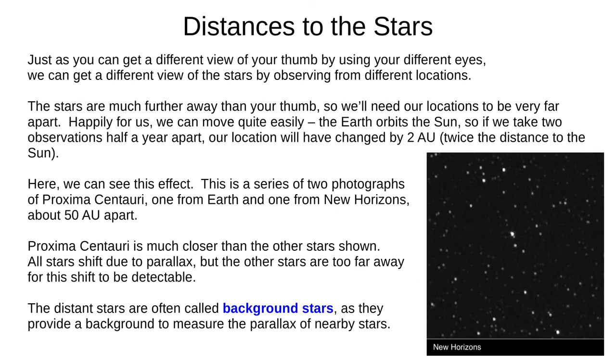In the same way, we can get a different view of the stars if we observe from different locations. The stars are much further away than your thumb, so we'll need our two locations to be very far apart to see any parallax. Luckily, we can move two astronomical units just by waiting six months for the Earth to orbit the Sun halfway. You can see a stronger parallax effect in this pair of images. One was taken from Earth, and the other by the New Horizons space probe on the same day, and you can clearly see the parallax of Proxima Centauri. This effect is only noticeable for nearby stars. Most of the stars in these images shift by too small an amount to be detectable. We call these much more distant stars background stars.